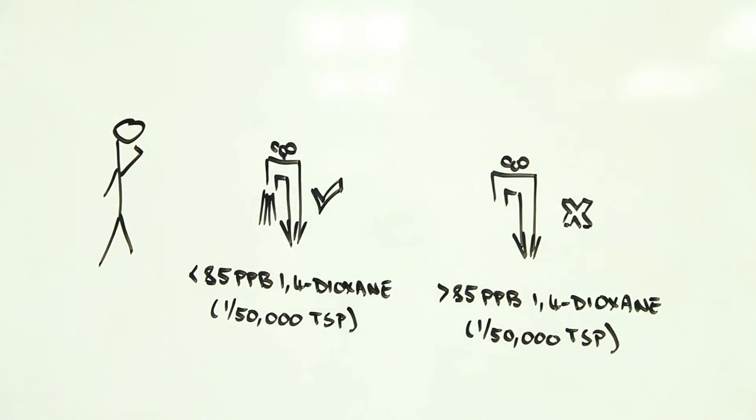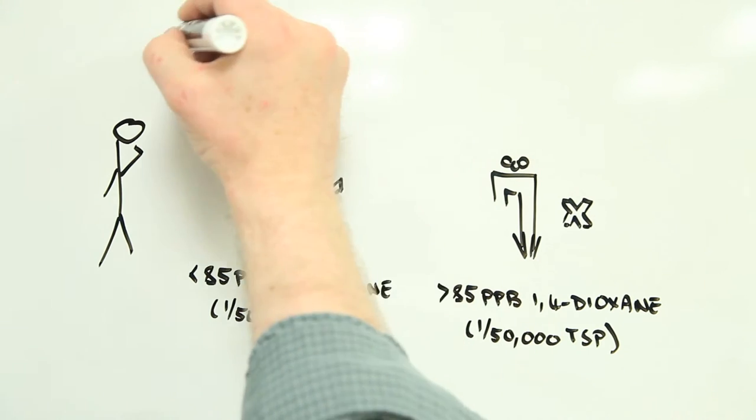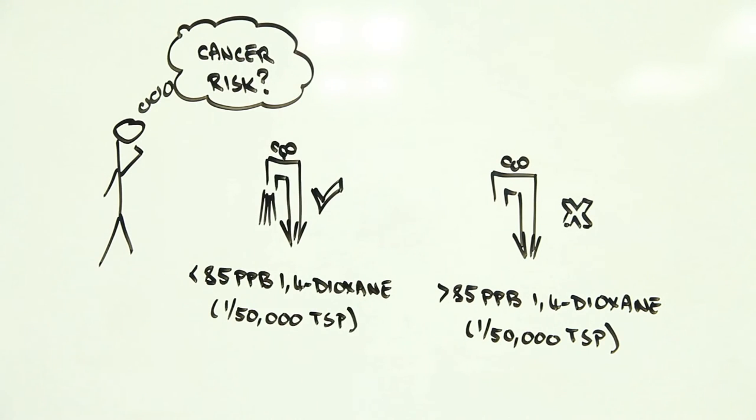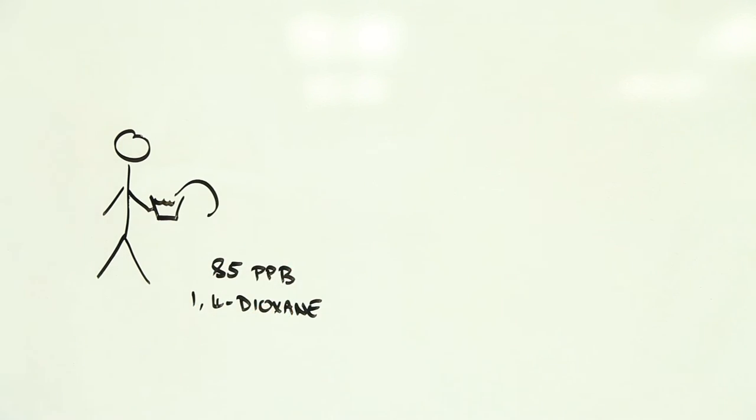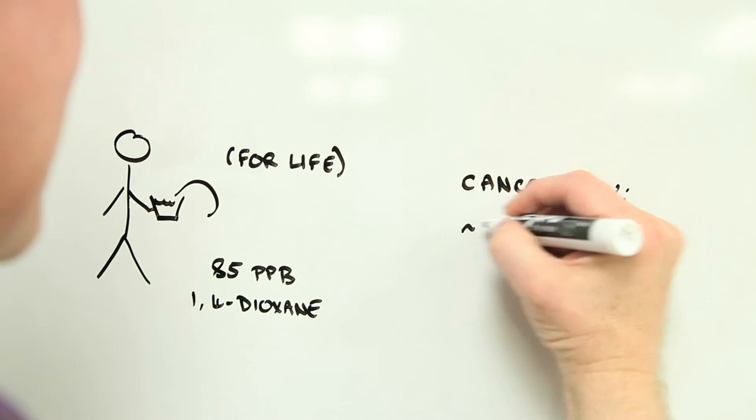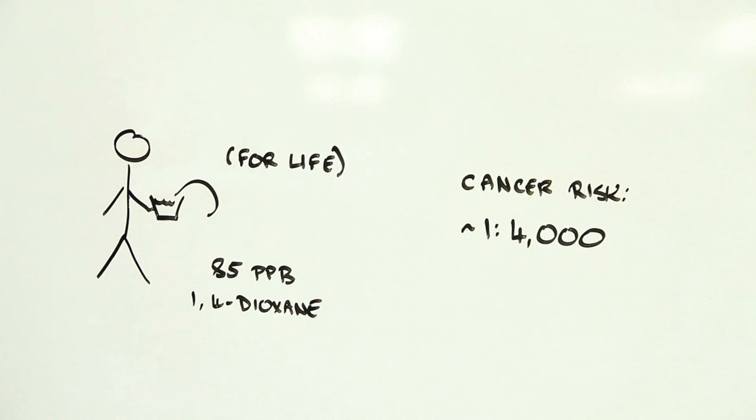So a useful question is, what's the cancer risk at this level? Following the US EPA analysis, if you were to drink water contaminated with dioxane at 85 parts per billion your whole life, your chances of developing liver cancer would be around 1 in 4,000.